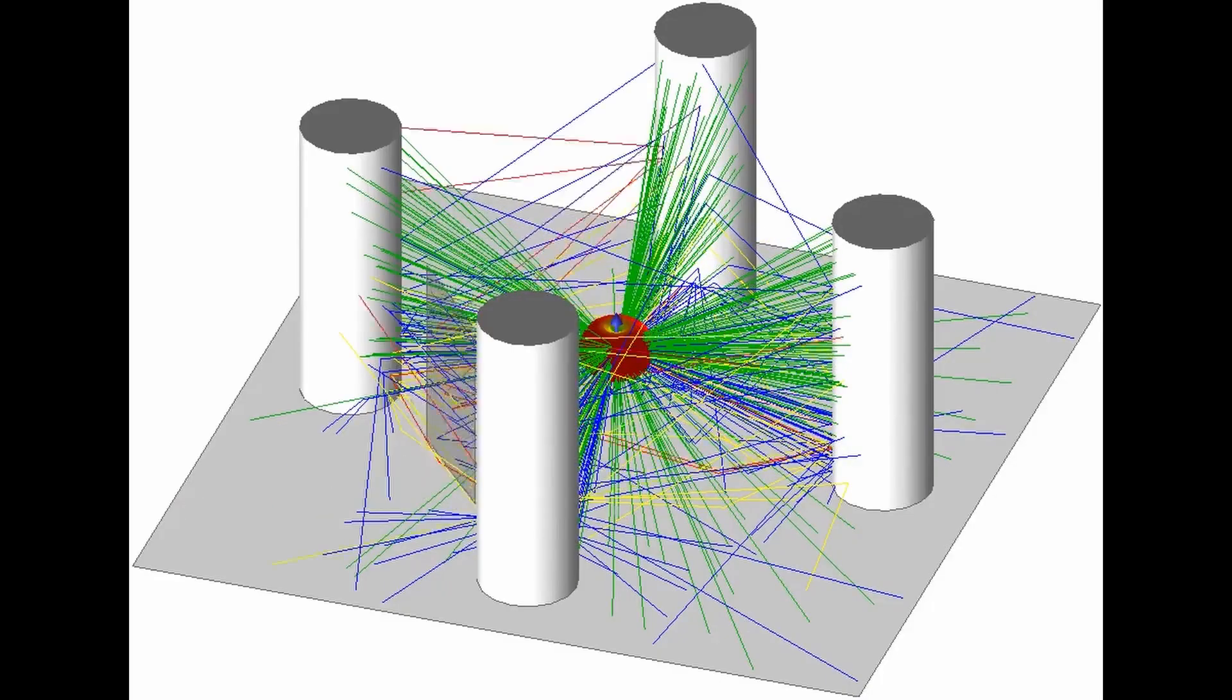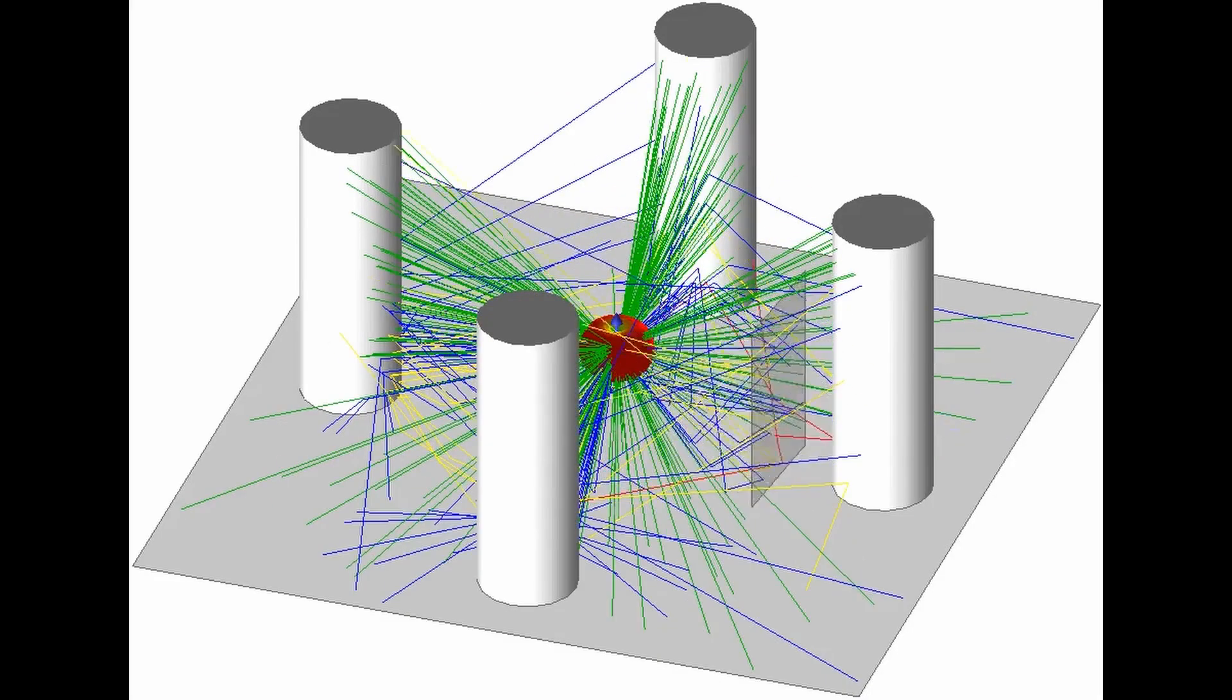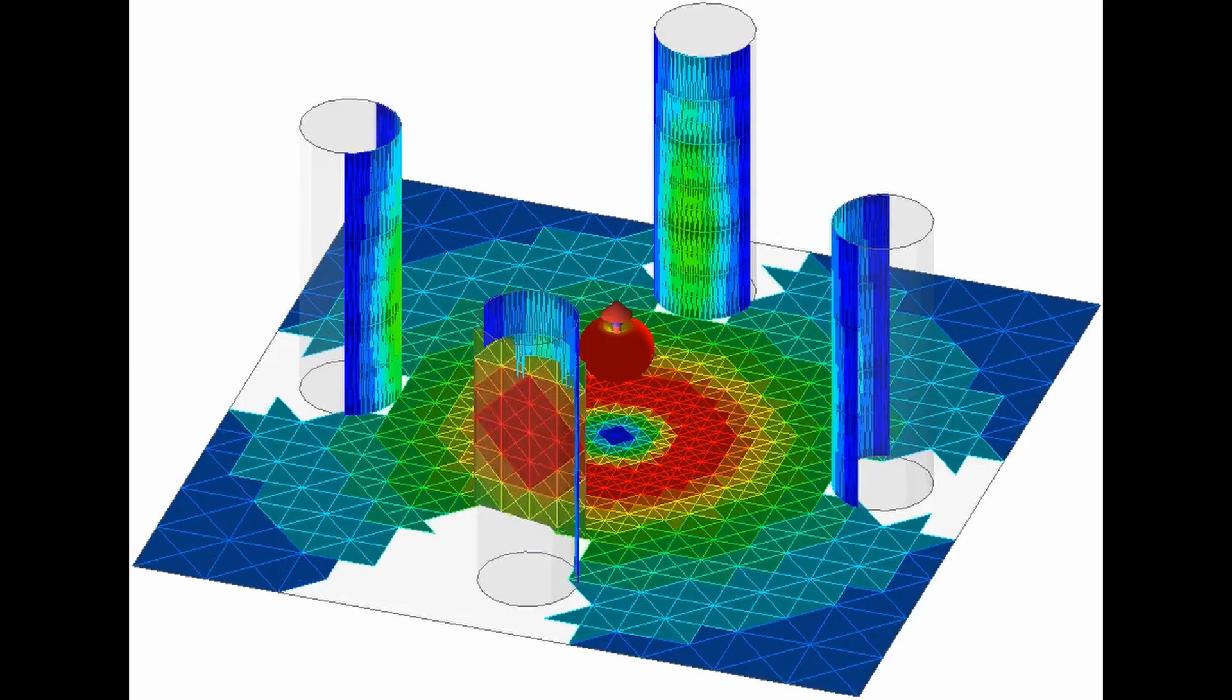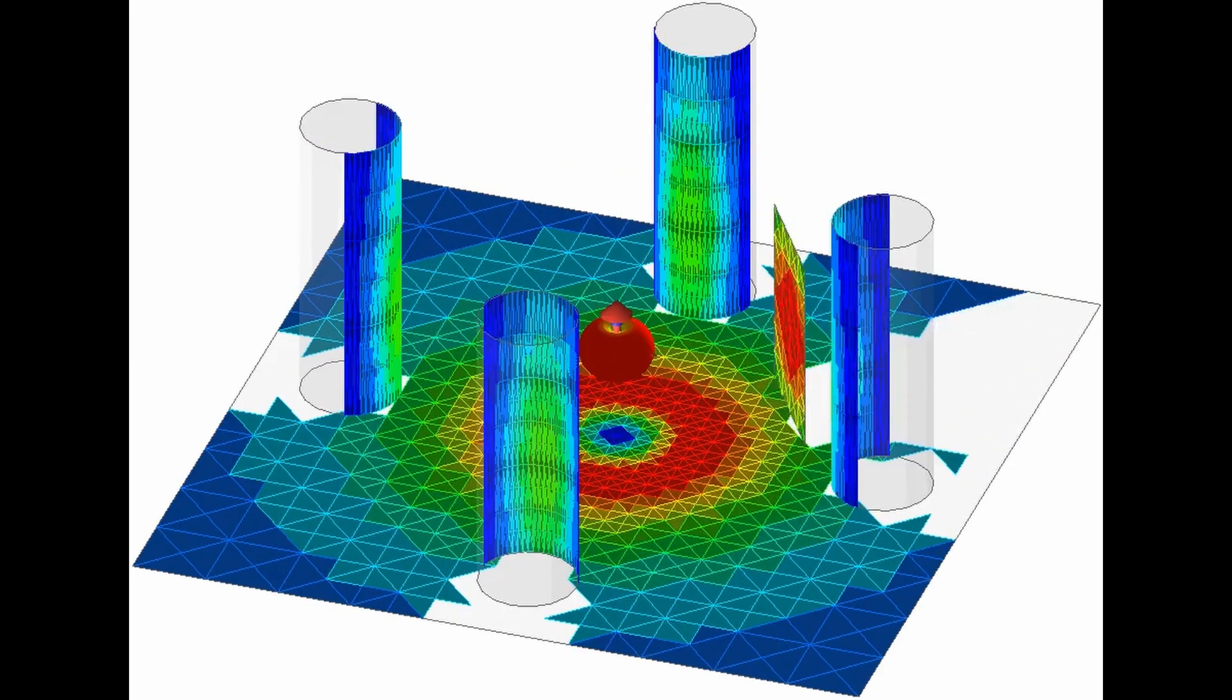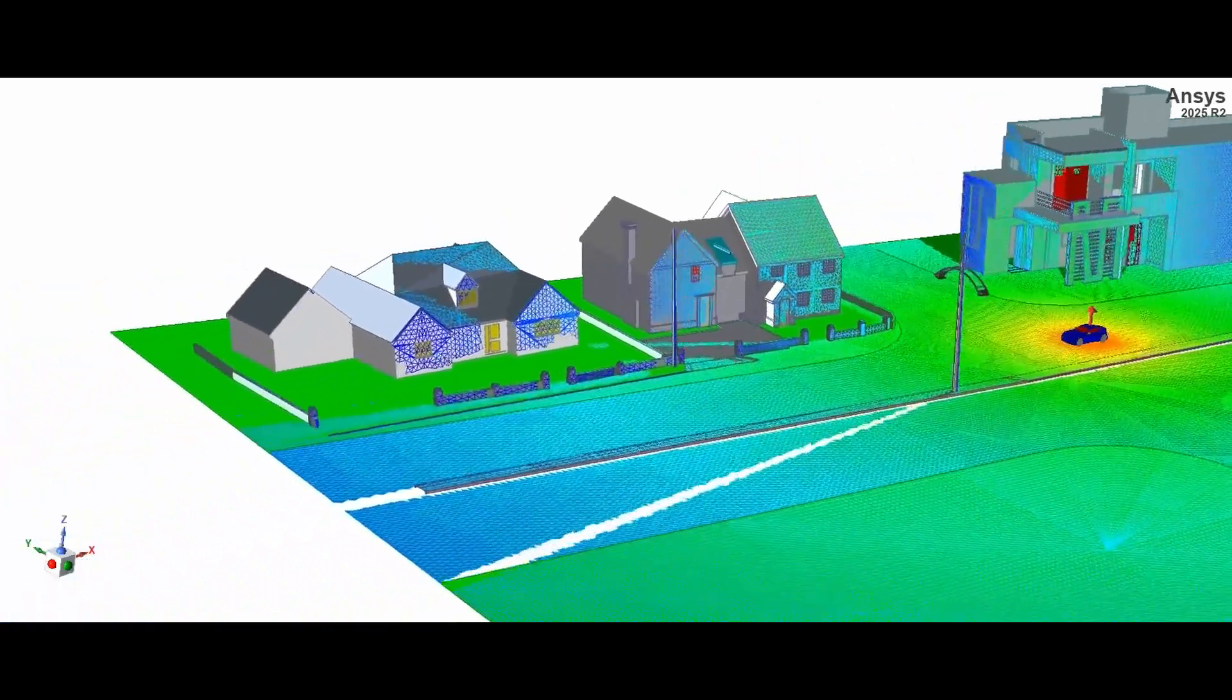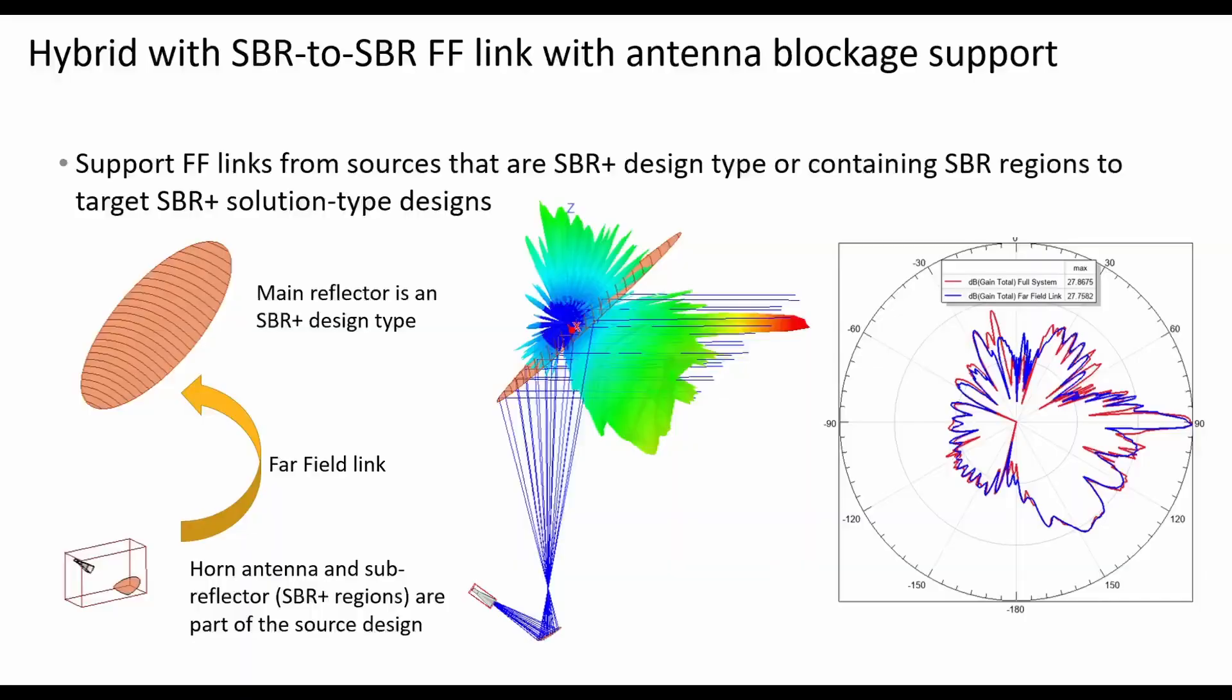Finally, HFSS 2025 R2 introduces advanced hybrid simulation links with SPR to SPR far field and antenna blockage support. Now, system integrators can model realistic interactions across multiple SPR plus designs, enhancing fidelity and scalability for radar communications and more.